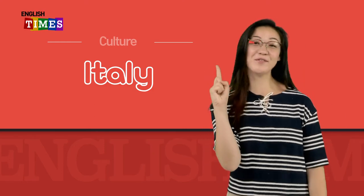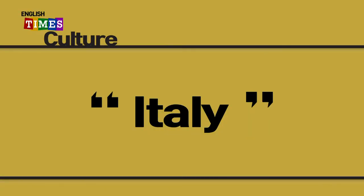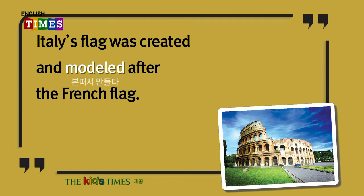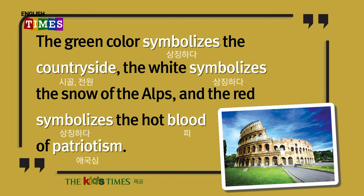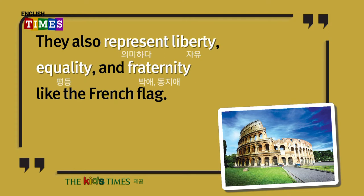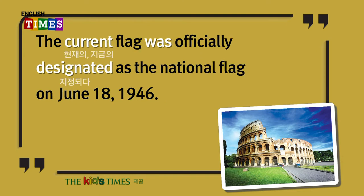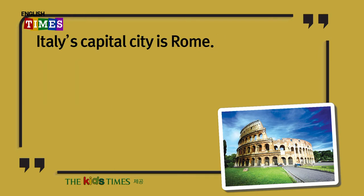Let's listen once more carefully. Italy's flag was created and modeled after the French flag. The first Italian flag was made in 1797 when Napoleon established the Cisalpine Republic in Italy. The green color symbolizes the countryside, the white symbolizes the snow of the Alps, and the red symbolizes the hot blood of patriotism. They also represent liberty, equality, and fraternity like the French flag. The current flag was officially designated as the national flag on June 18, 1946. Italy's capital city is Rome.